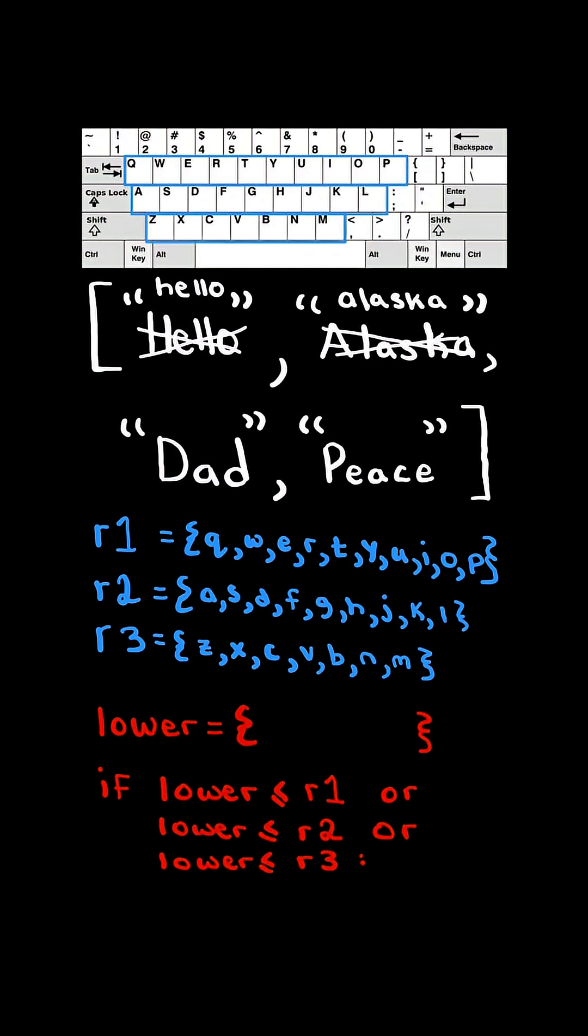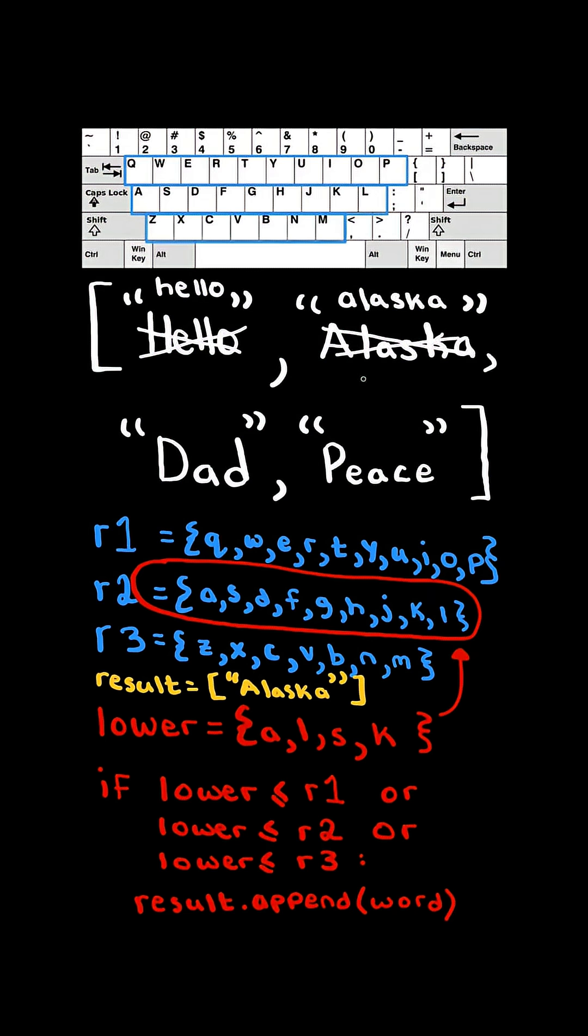Once again, we first convert the word to lowercase, and we convert the word to a set of characters. In this case, lower is a subset of r2, so we append the word to a resulting list, and we continue the process with the next word.